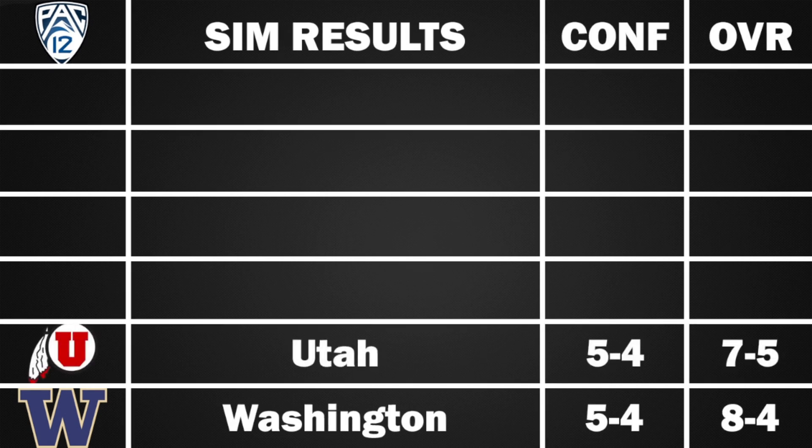Utah comes in at 7-5 overall, 5-4 in the Pac-12, after losing to Florida in non-conference play. They beat Baylor, Weber State, Oregon State, Cal, Arizona State, Washington, and Arizona, but lose to Florida, UCLA, USC, Oregon, and Colorado. Not too crazy to think Utah goes 7-5, especially with a loss to Florida.